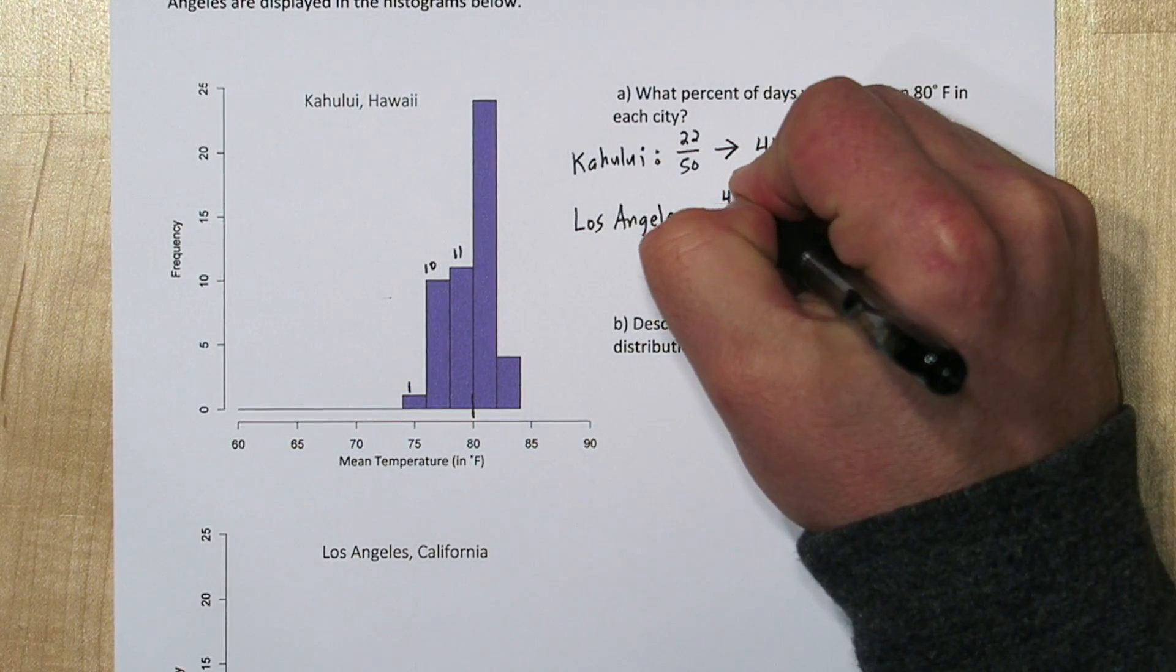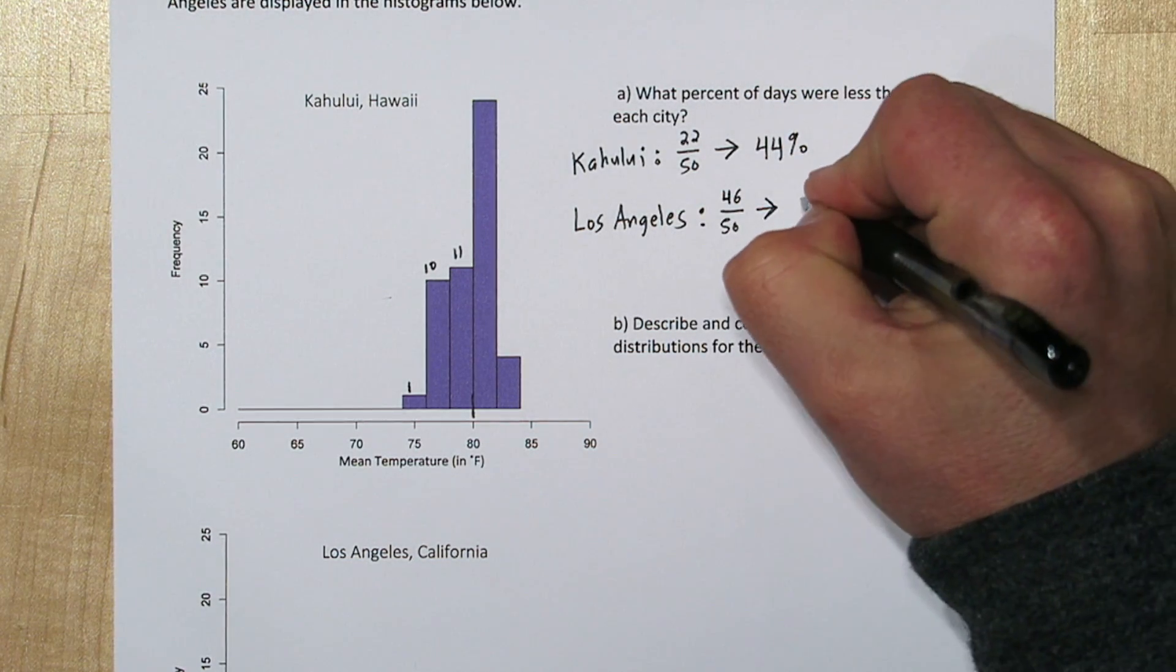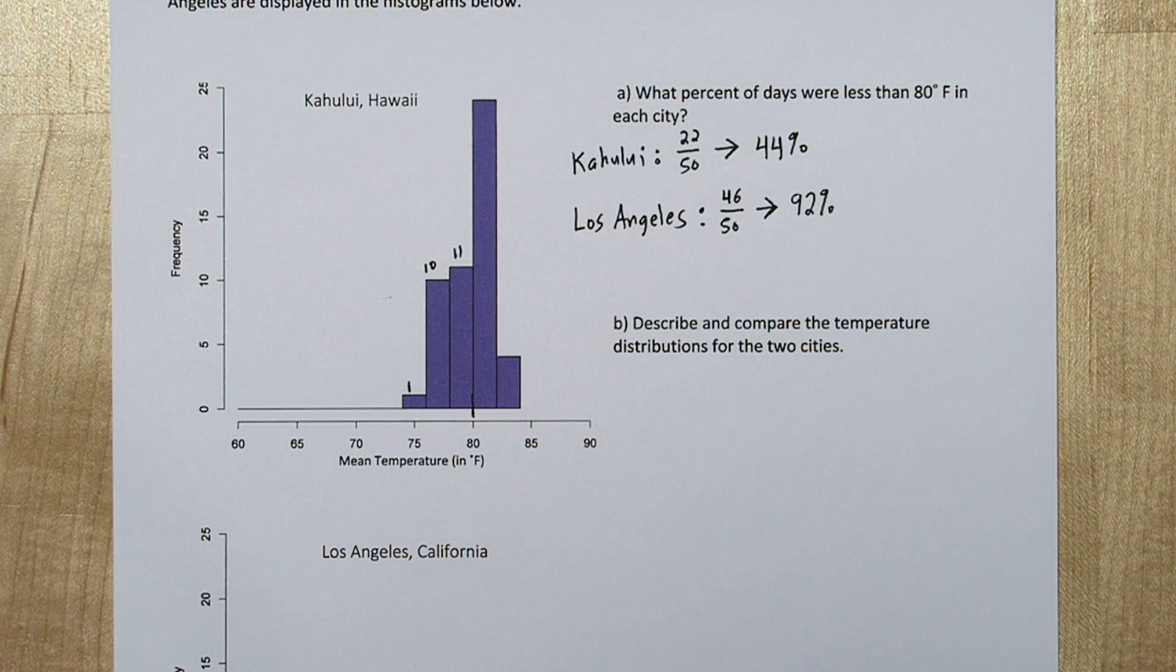This is a common trick in statistics. Always look is it easier to count the complement and subtract it away from 1 than to count it directly. So 92% of the days in this time period had mean temperatures of less than 80 degrees in Los Angeles.